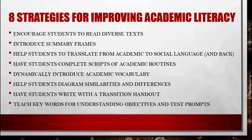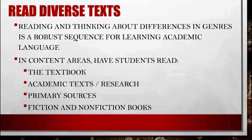There are eight strategies you can use to help improve academic literacy, which you can identify in your edTPA lesson plans. These include: encouraging students to read diverse texts, introducing summary frames, helping students translate between academic and social language, completing scripts for academic routines like presentations, dynamically introducing academic vocabulary, helping students diagram similarities and differences, and writing with a transition handout. Think about differences in genres — textbooks, academic texts, and primary sources all require different navigation skills.